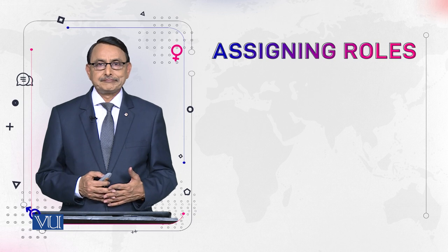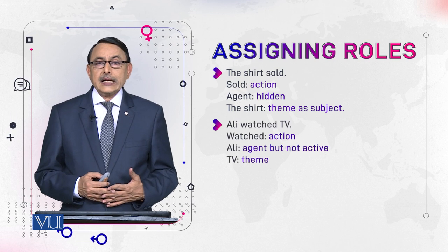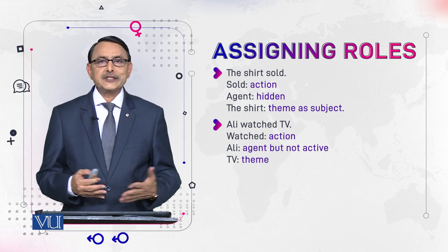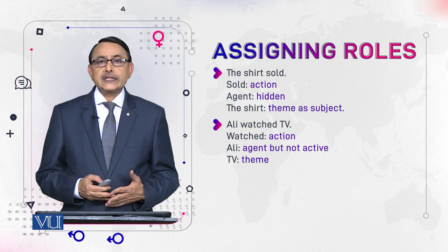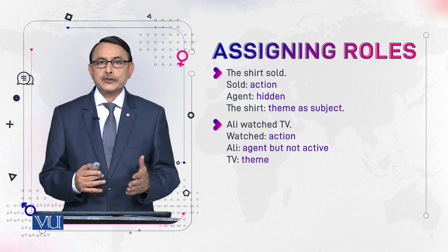Another example: 'The shirt sold.' Here 'sold' is the action, but the agent — who sells — is hidden and not mentioned. The shirt functions as subject, and here every subject is not an agent; this is the difference between the two terms. Agent is a term from semantics, from meaning, while subject is a term from grammar — it is a grammatical role. Subject and agent are not the same. We equate them because of interference of Urdu grammar; in Urdu, every subject is 'fa'il,' meaning doer — the agent — but this is not applicable to English.